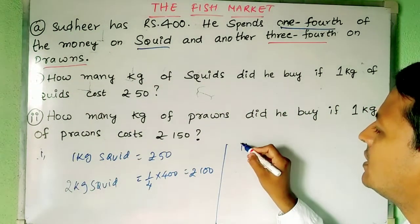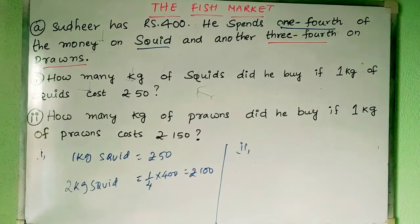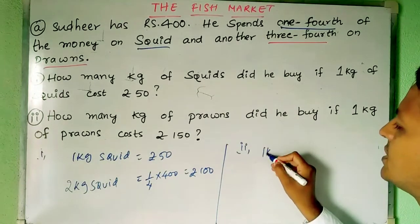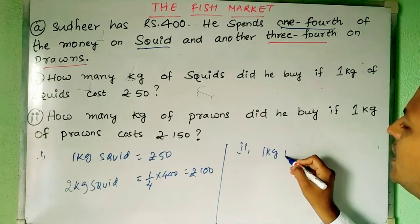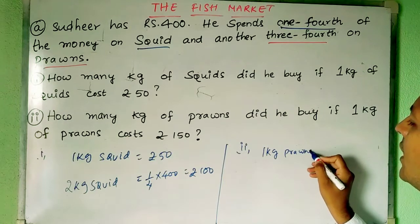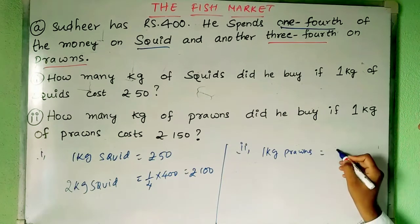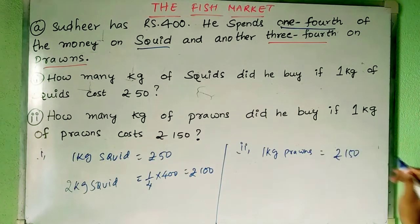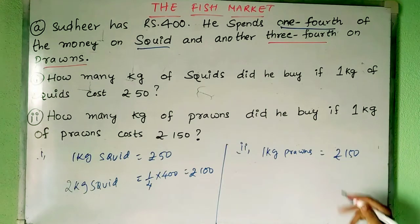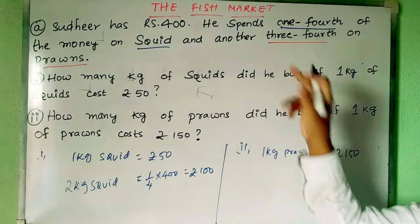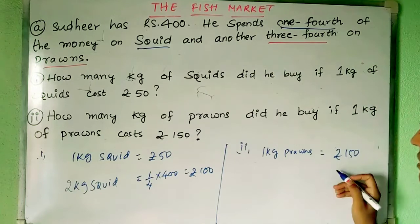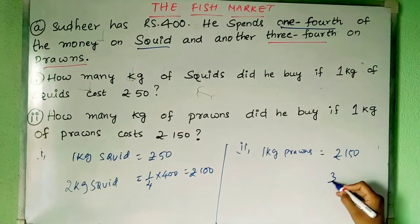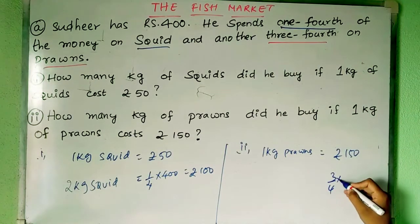Now coming to the second part. How many kg of prawns did he buy if one kg of prawns costs ₹150? He is spending three fourths of 400, so how much money is he spending? Three fourths of 400.